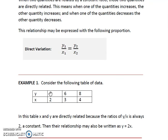The ratio of 4 to 2 equals 2, the ratio of 6 to 3 equals 2, and the ratio of 8 to 4 equals 2. The relationship may also be written as y equals 2 times x: 4 is 2 times 2, 6 is 2 times 3, 8 is 2 times 4.